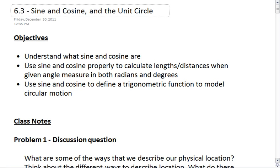The objectives here are to understand what sine and cosine are, to use sine and cosine properly to calculate lengths and distances when given angle measure in both radians and degrees, and to use sine and cosine to define a trigonometric function to model circular motion.